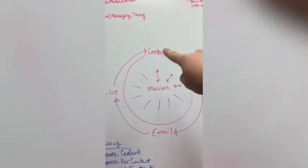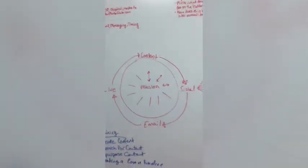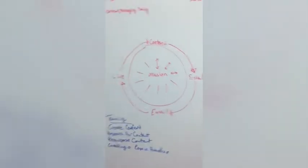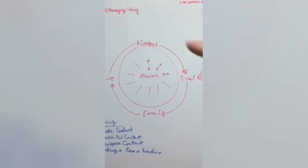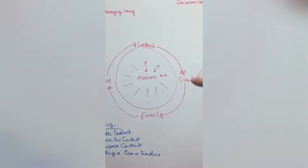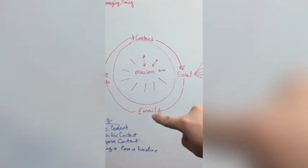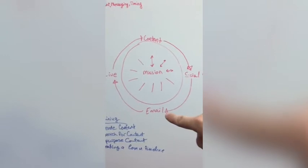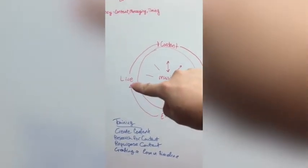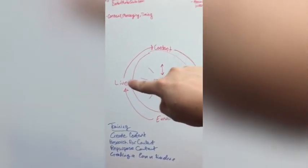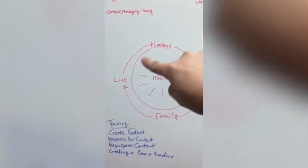All of these things feed into one another. This is an overall framework — if you follow it, it provides the guidelines so you are intentional with what you're doing. Content feeds into what you post on social. What you're doing on social should, in a lot of ways, get people to sign up for your email. Email is how you get people to show up live. Live is the crux of how you produce content.